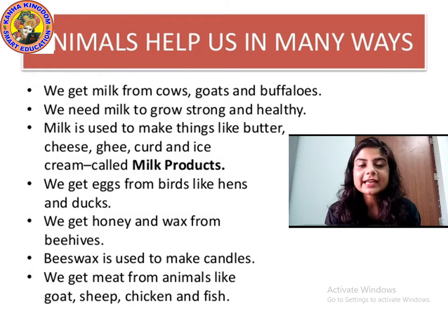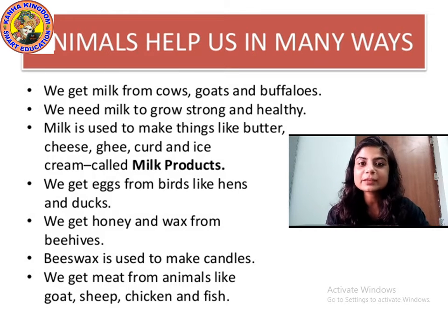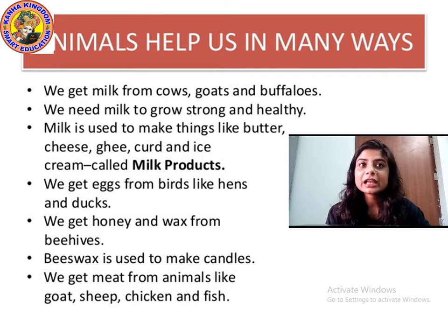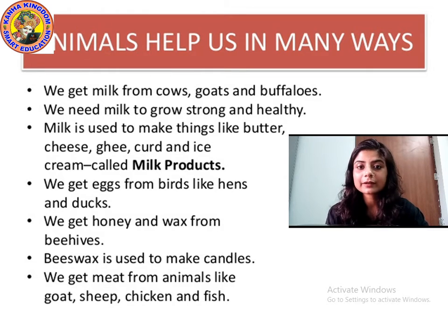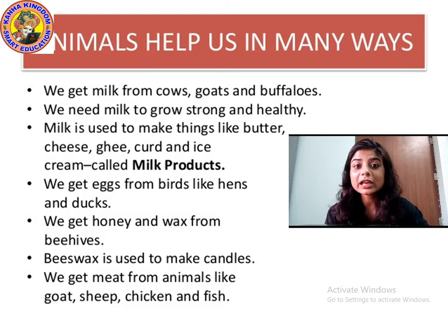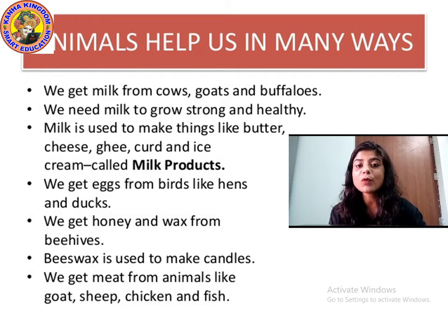Now let us read about animals that help us in many ways. First point: we get milk from cows, goats, and buffaloes. We need milk to grow strong and healthy. We drink milk to grow strong and healthy; it gives us energy.